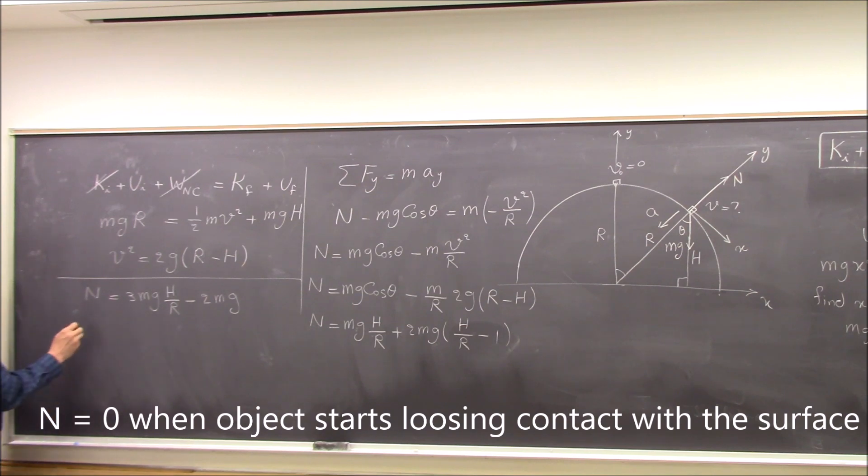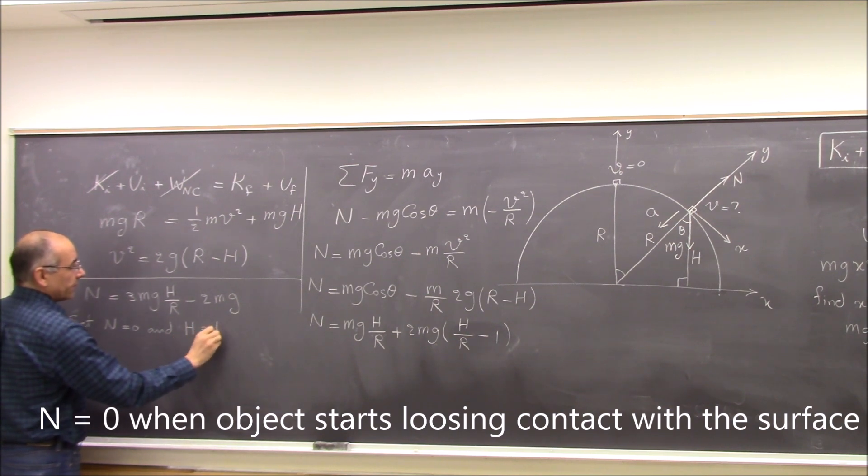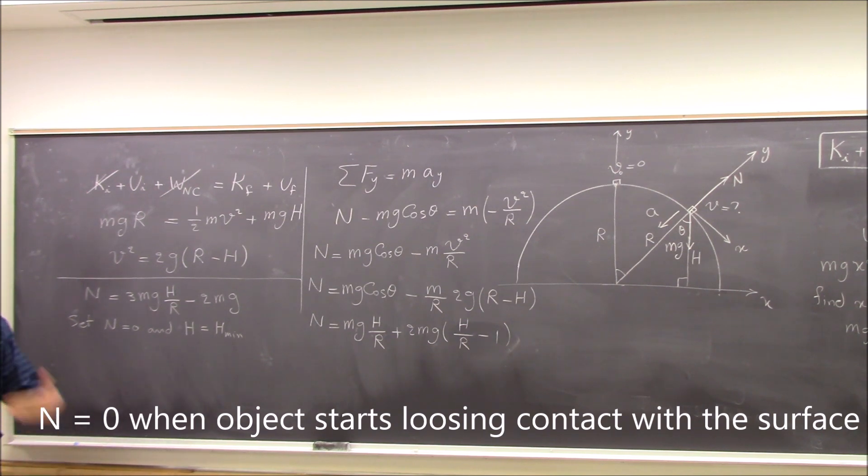So we set N equal to zero and H is equal to H minimum, where it is still with contact. Right? So now if you do that, zero equal to three, then Mg can be cancelled.